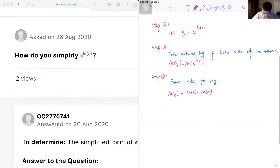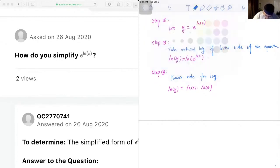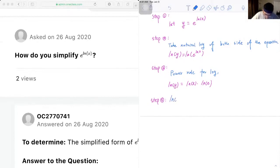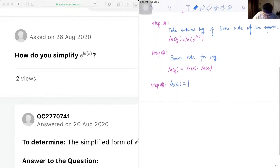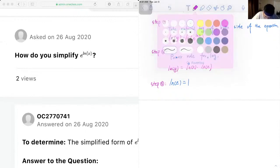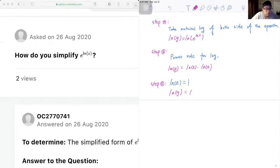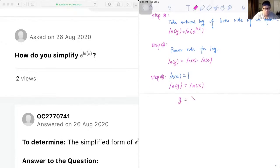And then next step, we know that log e is just equal to 1 because there is an invisible base e. So e to the exponent of 1 is equal to e, right? So the equation can be simplified to, log y is equal to log x and y is just equal to x.